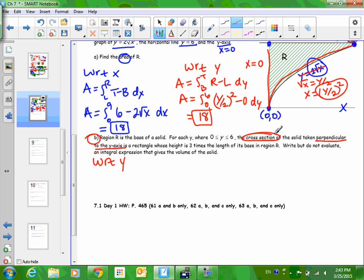So we have a solid, we have cross sections, we have perpendicular to the y-axis, and we have rectangles. Okay? The height is three times the length of its base. Write but do not evaluate an integral expression. This is good. I don't even have to integrate. I just have to write the integral. Okay. So the difference between volume and area is what do you do with this thing right here? Okay. This thing that I'm circling, not the actual integral, but what's inside the integral, what letter did we start calling that? S. Okay?